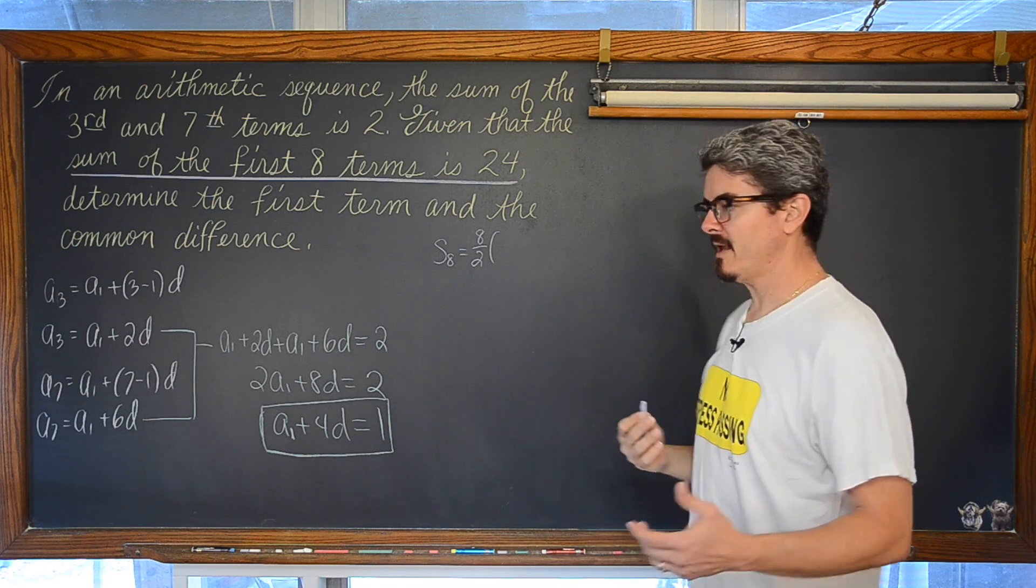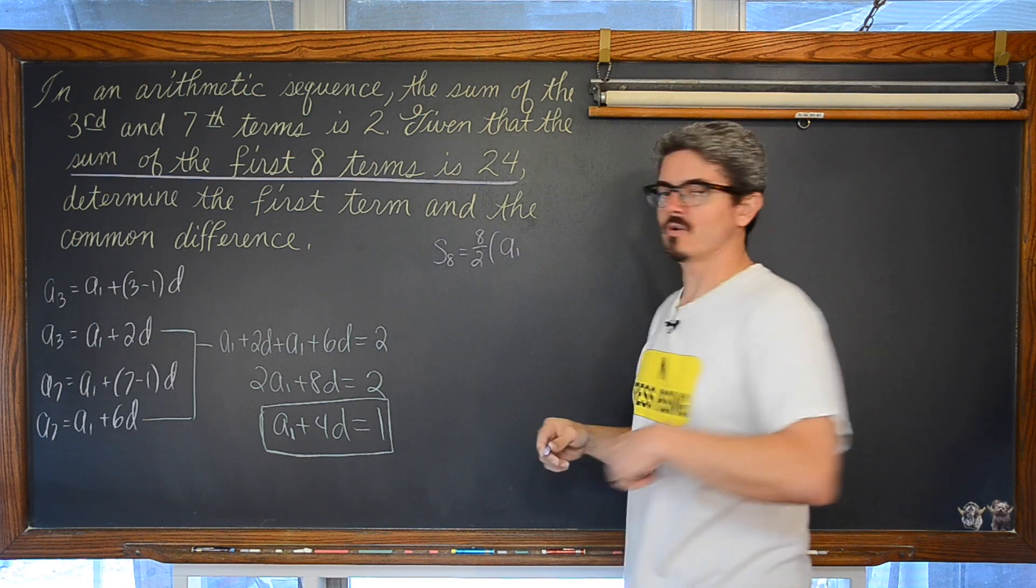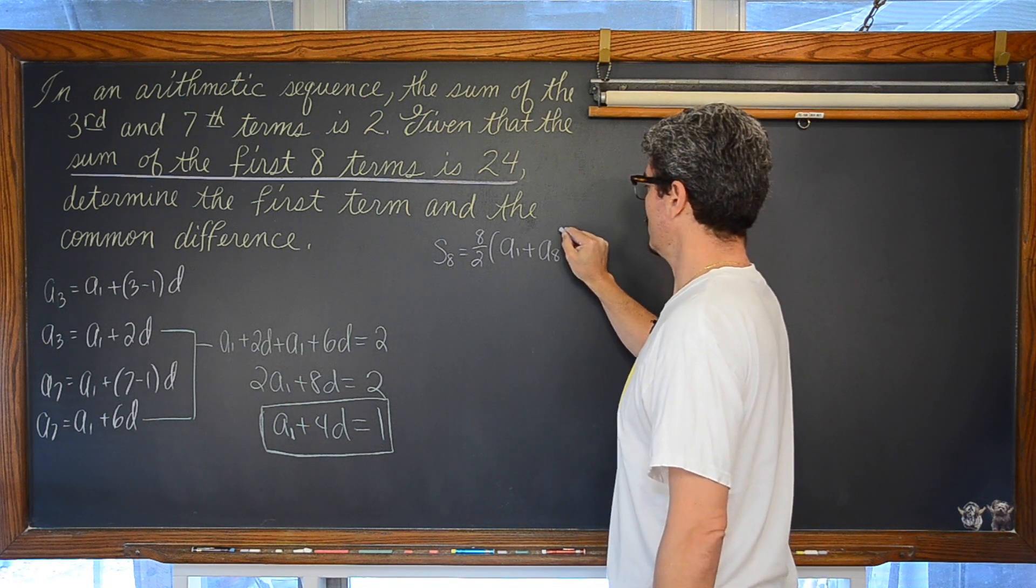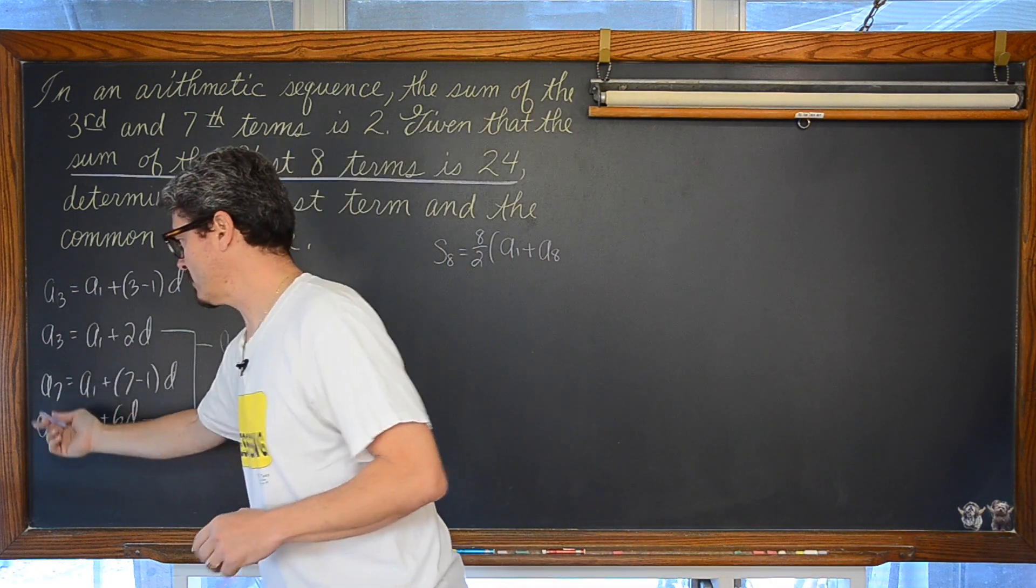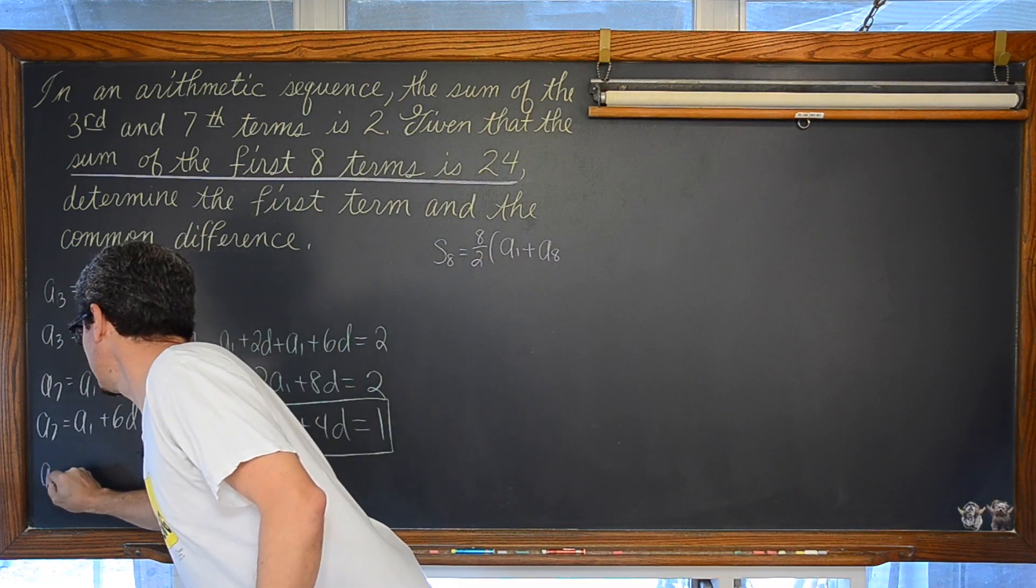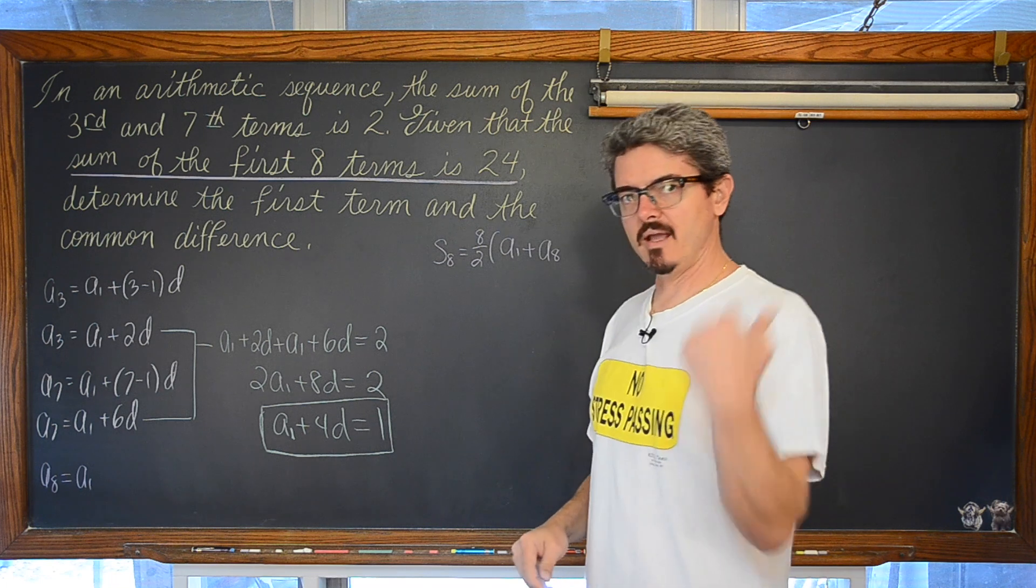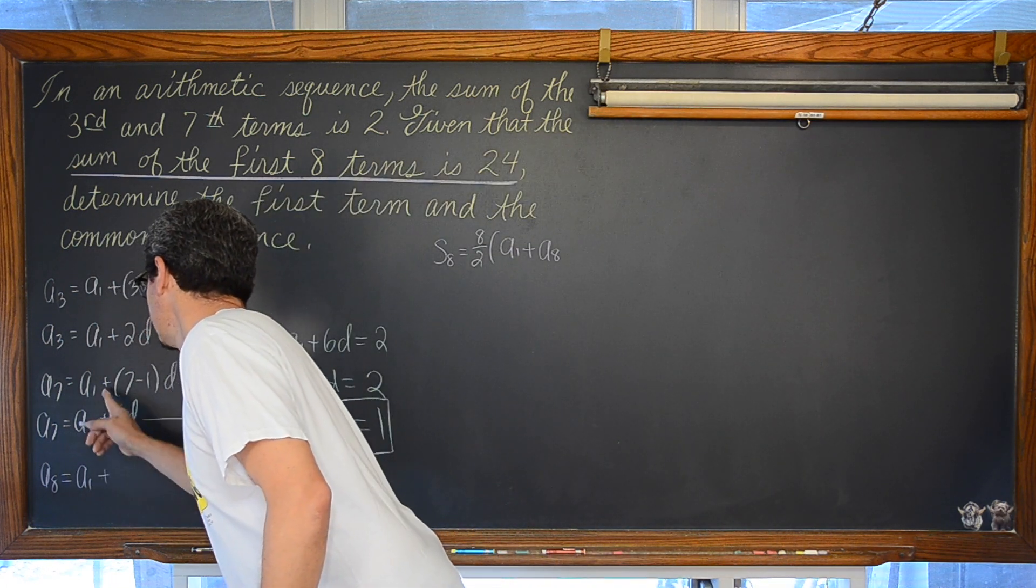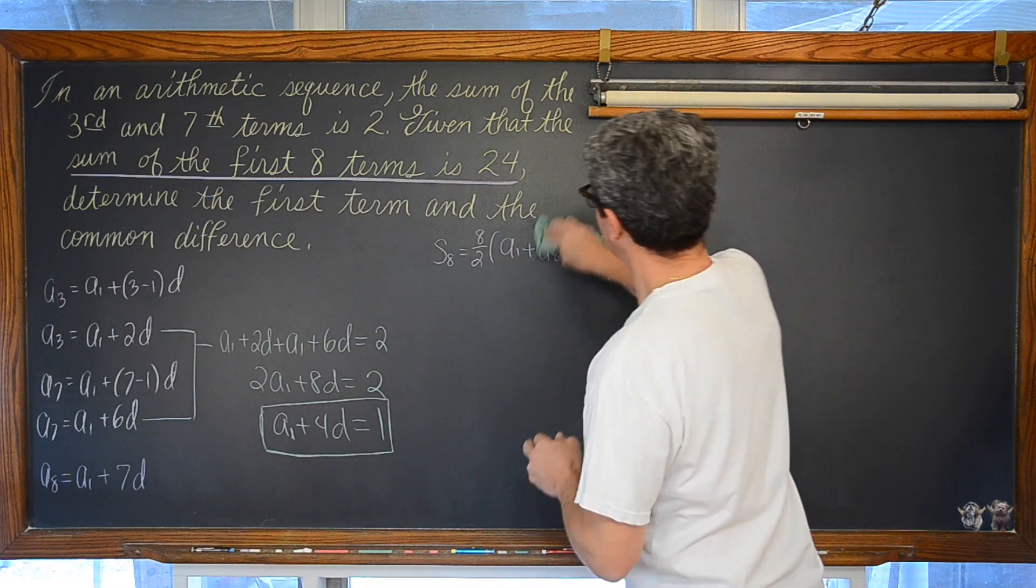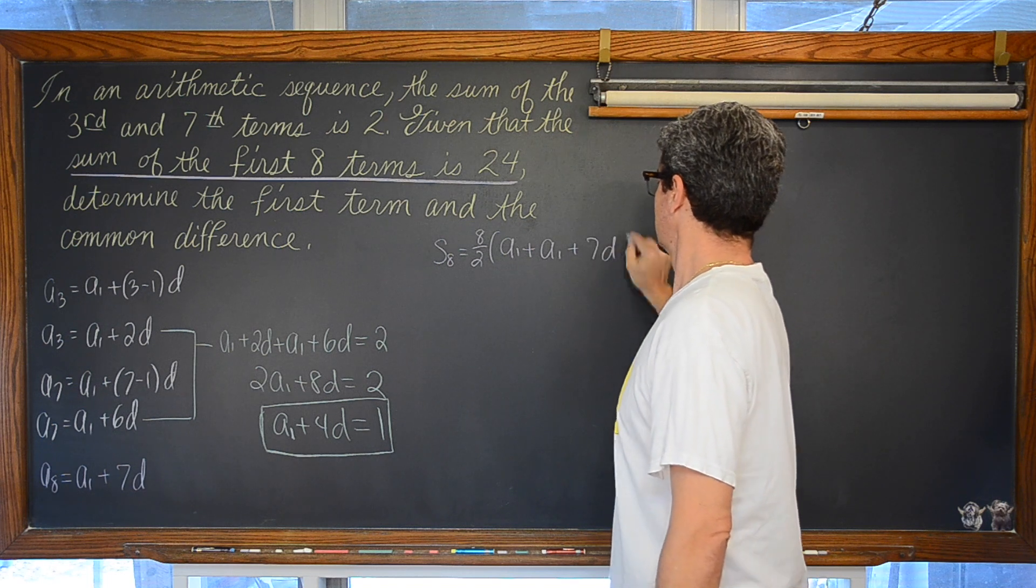And the nth term, or in this case the eighth term, the a sub 8 term. Well, I don't really have the a sub 8 term. So we are going to have to figure that out just like we found out the a sub 3 and a sub 7th term. So, we have a sub 8 is equal to a sub 1 plus n minus 1, 8 minus 1, plus 7d. So a sub 8 is a sub 1 plus 7d.